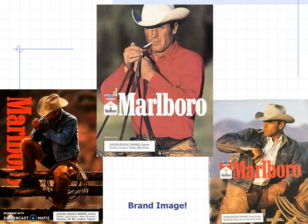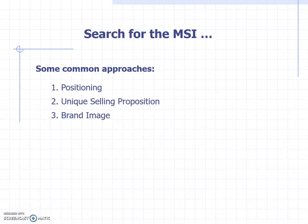Brand image advertising uses these kinds of symbols and imagery, typically with people. We try to associate the brand with the type of person that would use it and the situations they might find themselves in — which may not be so logical, but the symbolism and the feelings it gives you is what's important.